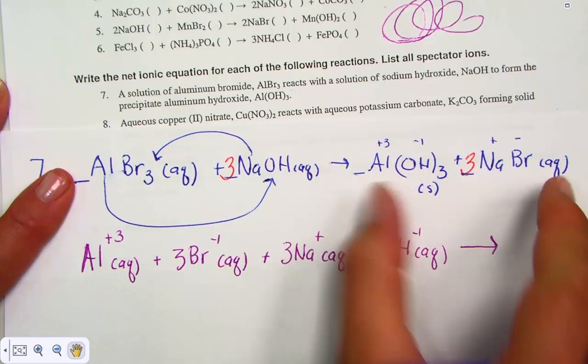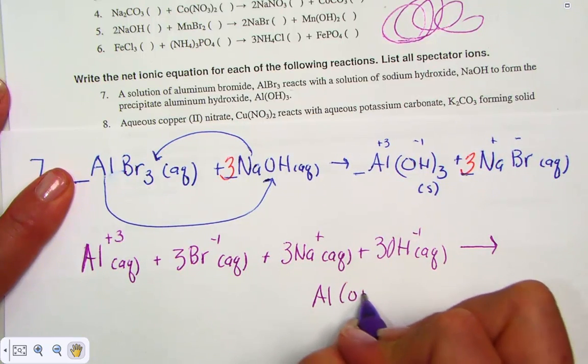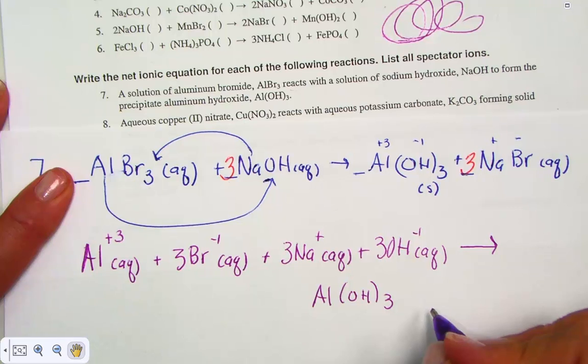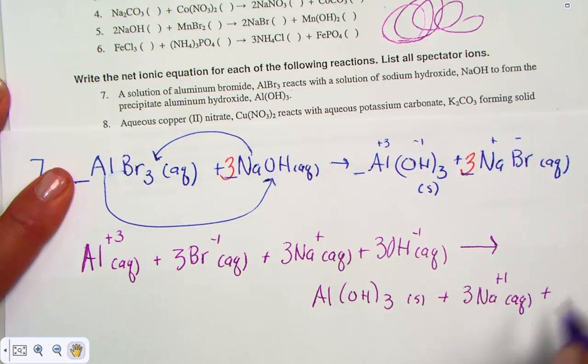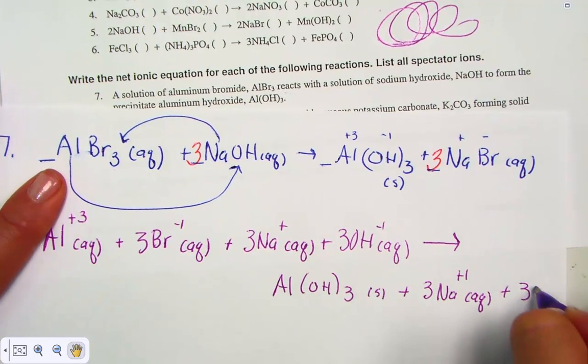For the product side, we leave together our solid non-electrolyte, the precipitate of aluminum hydroxide, and dissociate into aqueous ions of sodium and aqueous ions of bromide.